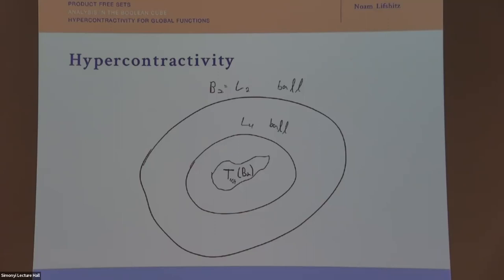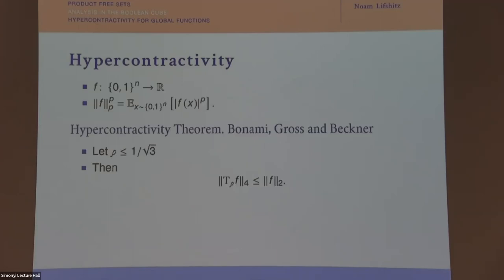What is hypercontractivity about? We have the L2 unit ball, and the L4 unit ball is always contained in the L2 unit ball over a probability space. Hypercontractivity tells us that the noise operator sends the big L2 ball into the small L4 ball. Any operator corresponding to a random walk is a contraction in Lp, but here hypercontractivity means we send the big ball into the small ball.